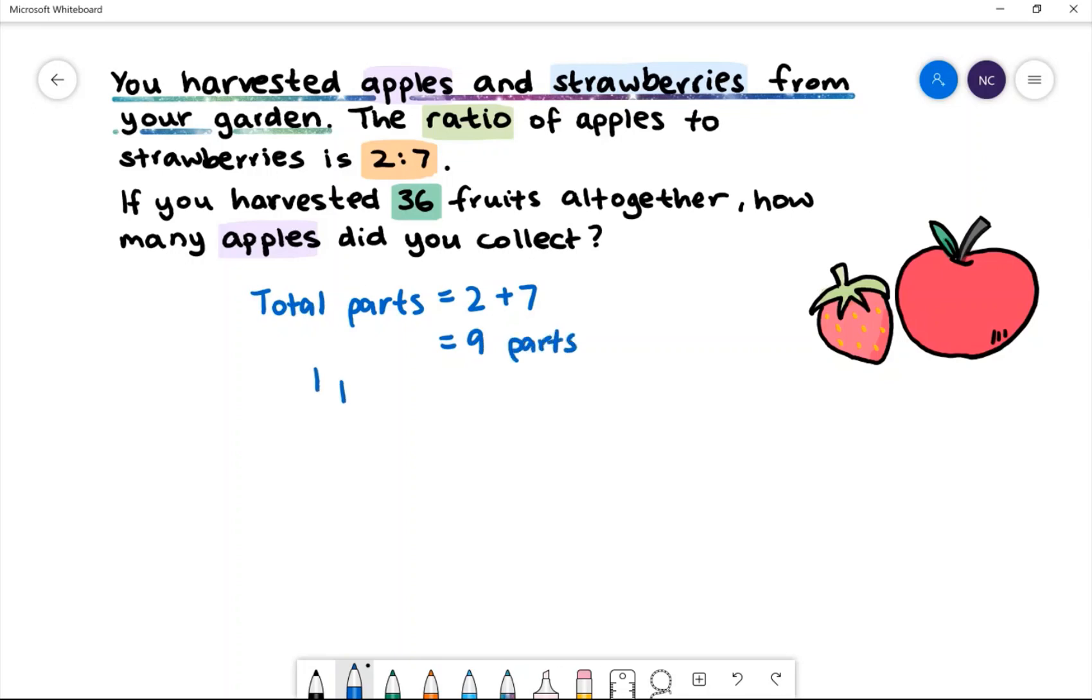We can then find out how much 1 part is worth. We can do that by doing 36 fruits divided by 9 parts. One part is worth 4 fruits.